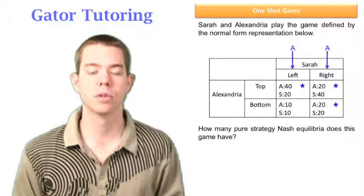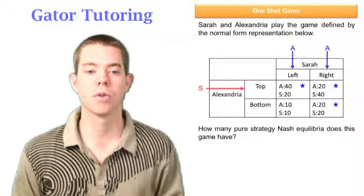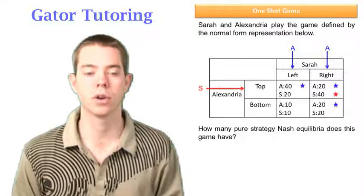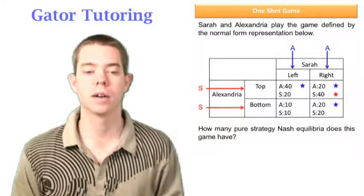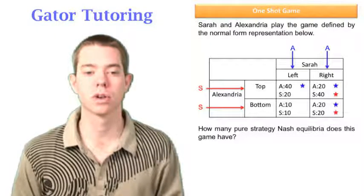Now Sarah's thinking, if Alexandria moves top, well I'd rather have 40 than 20, so I can star 40. And if Alexandria moves bottom, well then I'd rather have 20 than 10, so I can star 20.